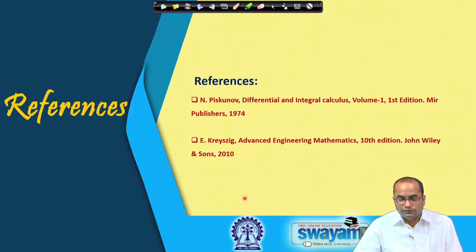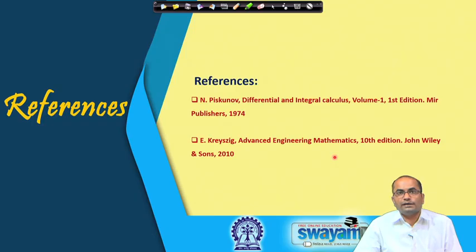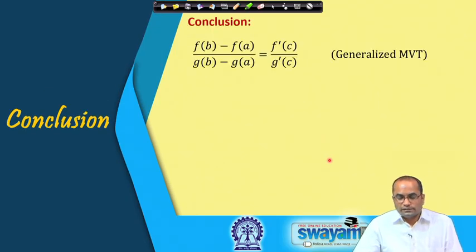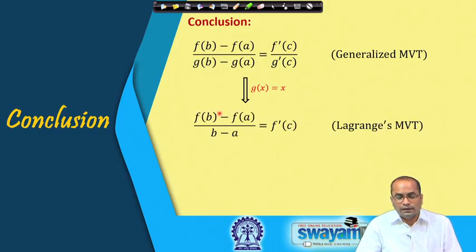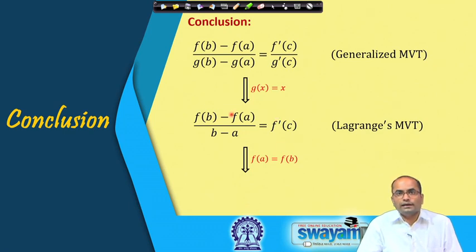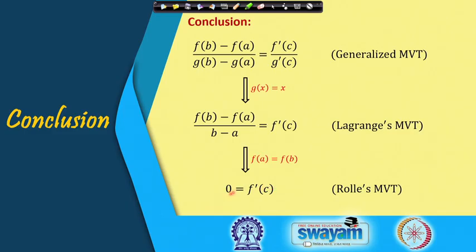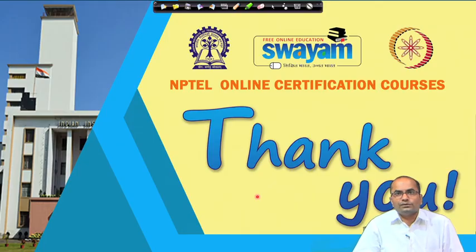The references used are Piskunov's Differential and Integral Calculus and Kreyszig's Advanced Engineering Mathematics. In conclusion, today we learned the generalized (Cauchy) Mean Value Theorem, and that substituting g(x) = x gives the Lagrange Mean Value Theorem, and further adding f(a) = f(b) gives Rolle's theorem where f'(c) = 0. Thank you.